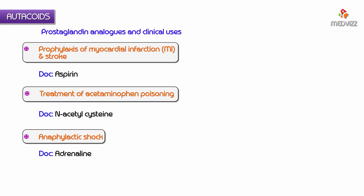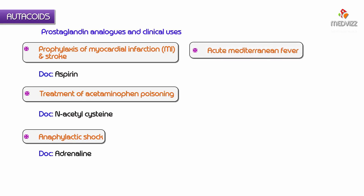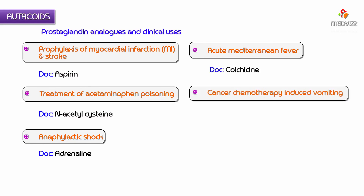The drug of choice for acute Mediterranean fever is colchicine. For cancer chemotherapy-induced vomiting — specifically cisplatin-induced vomiting — it can occur either early or delayed.